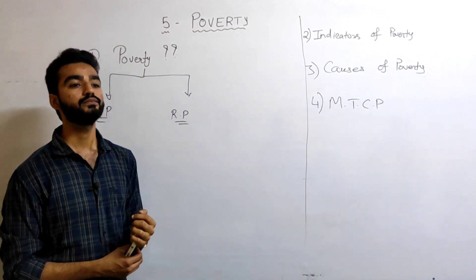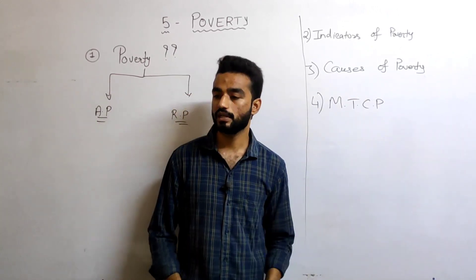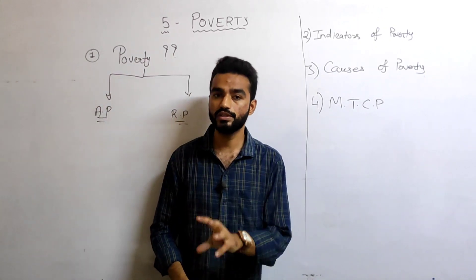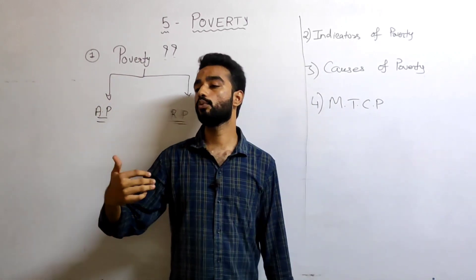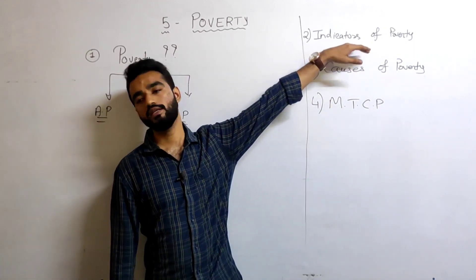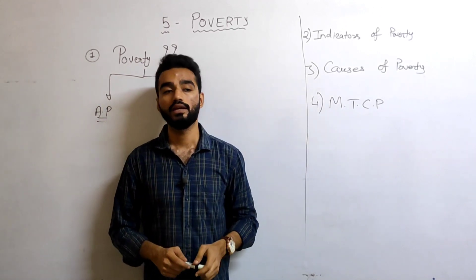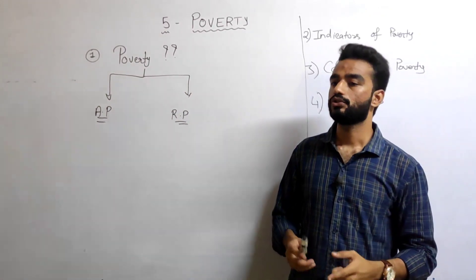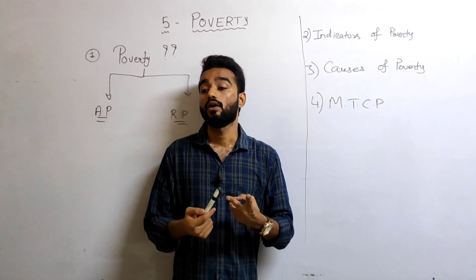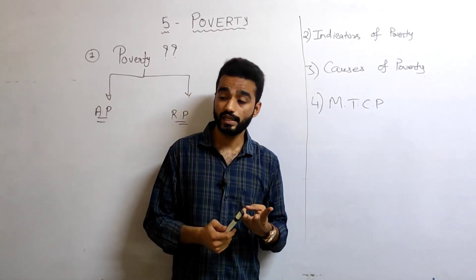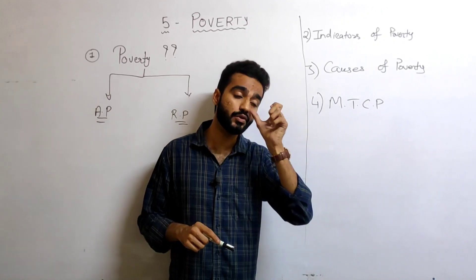Indicators of poverty include: low per capita income — if you look at a country's per capita income, that tells you something. Other indicators include hospital facilities, education level, and corruption level. There are some indicators which will tell you that in a particular section or area, what is the level of poverty.